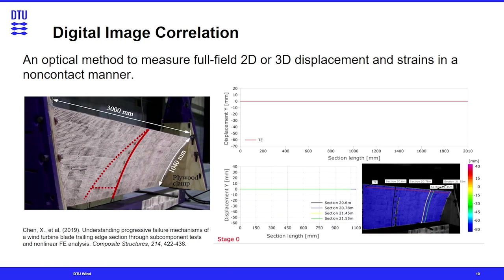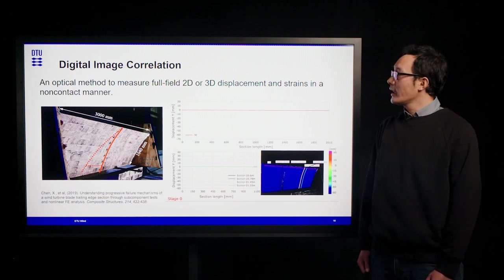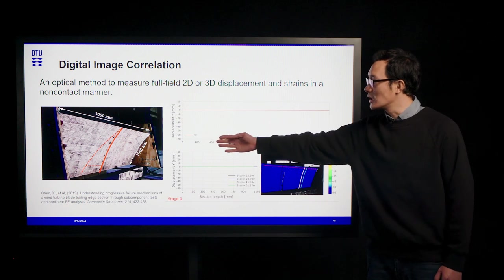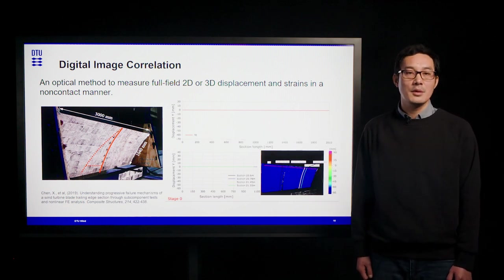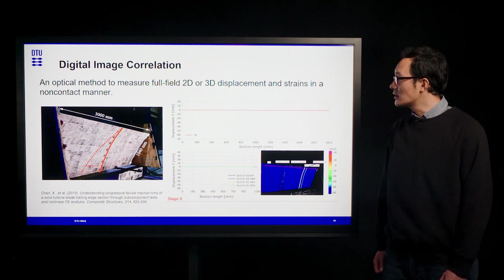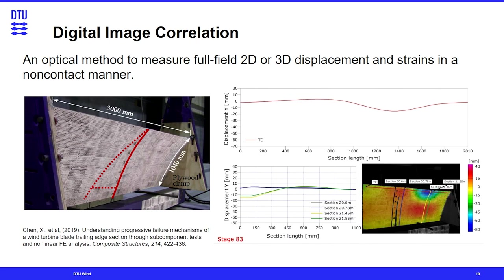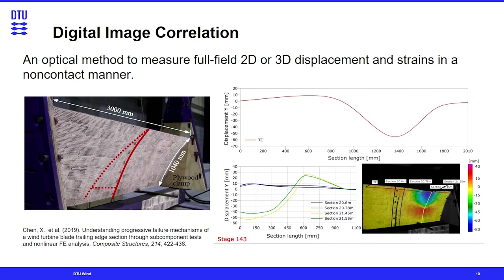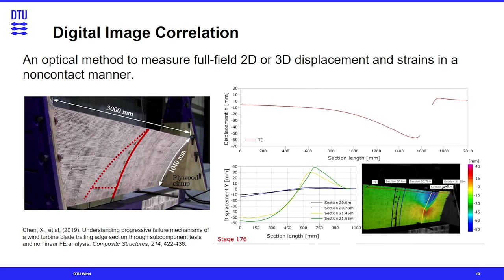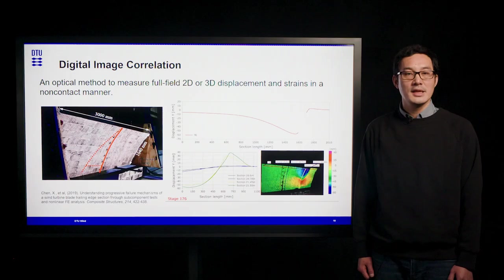Digital image correlation is an optical method to measure full-field 2D or 3D displacement or strains in a non-contact manner. Here shows an example of digital image correlation measurement conducted on a subcomponent test of a trailing edge cut from a large blade. Speckle patterns are applied on the surface of the specimen. By tracking the individual movement of those speckle patterns, the strain or displacement can be measured in full field. Under compressive load, the buckling-driven failure phenomenon can be captured in full field in 3D, giving a very good overview of how the critical region is subject to buckling-driven failure.